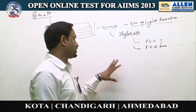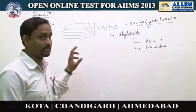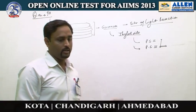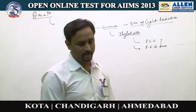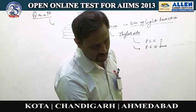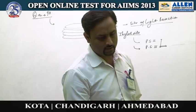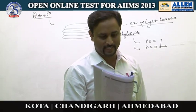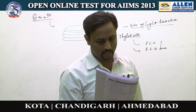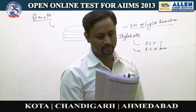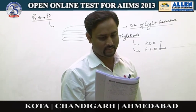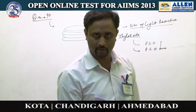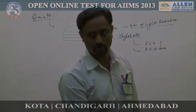The site of starch synthesis is the stroma, and that's why the answer to question 19 is 2. X represents grana, Y represents stroma, and Z represents starch granules. Thank you.